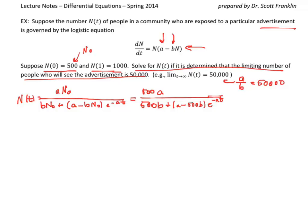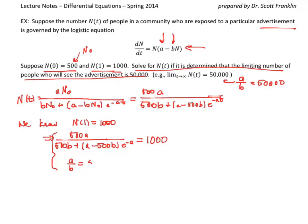Alright, so two unknowns still. So we know that n of 1 is equal to 1,000. So that would tell us that if we plugged in 1, 500 a, plug in 1 for t, over 500 b plus a minus 500 b, e to the negative at. t, now that t right there is 1, so I'm just going to have e to the negative a, that has to equal 1,000. Okay, we've got two unknowns in there, we've got an a and a b, so our other unknown is that a over b is equal to 50,000.